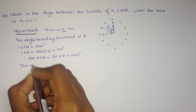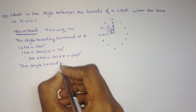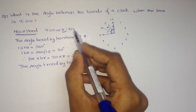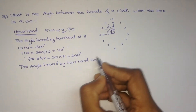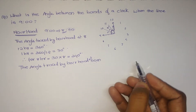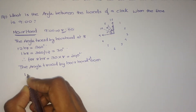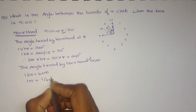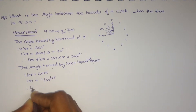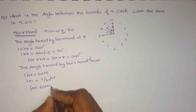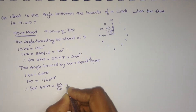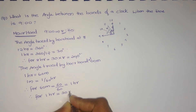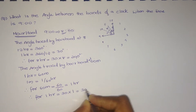Now we have to find the angle traced by the hour hand during the 16 minutes. The angle traced by the hour hand at 16 minutes — so we have to convert 16 minutes to hours. We know that 60 minutes equals 1 hour, therefore 1 minute equals 1 by 60 hour. Therefore for 16 minutes, that equals 16 divided by 60 hours. Therefore for that fraction of an hour, the angle is 30 multiplied by 16/60, which is equal to 8 degrees.